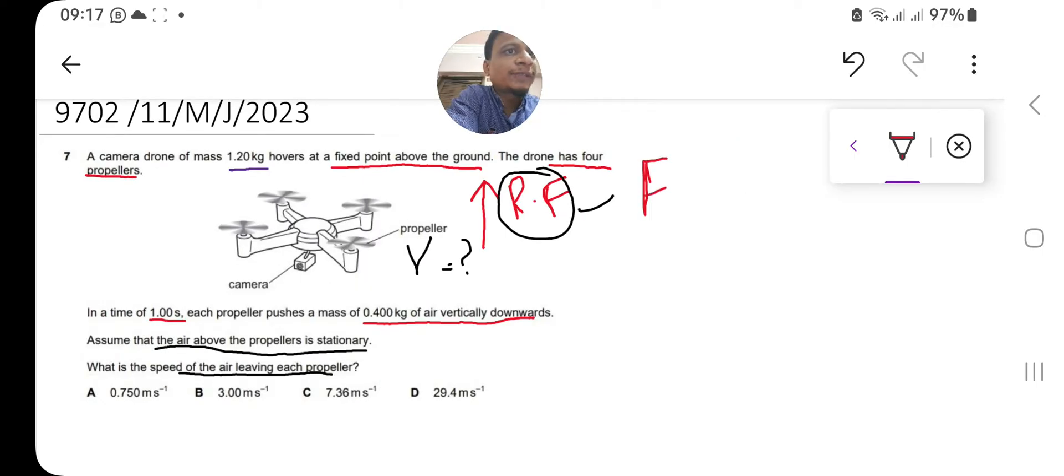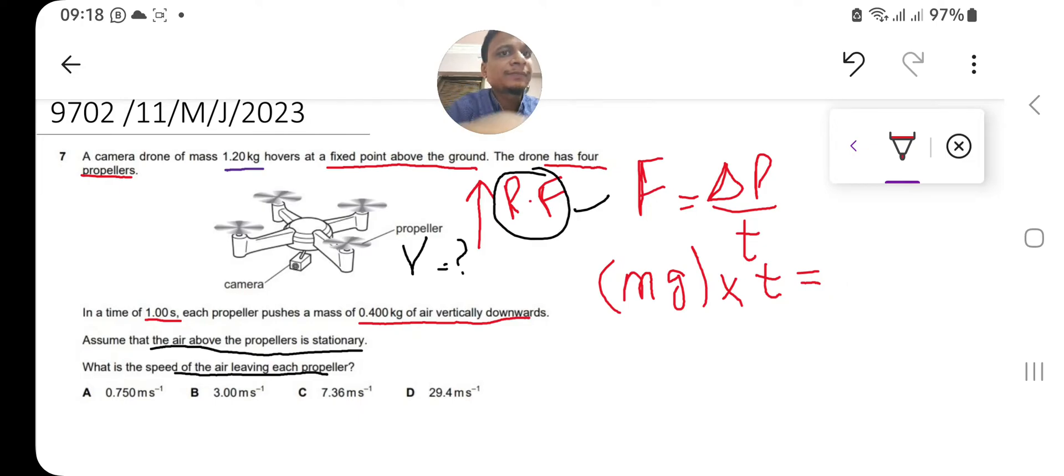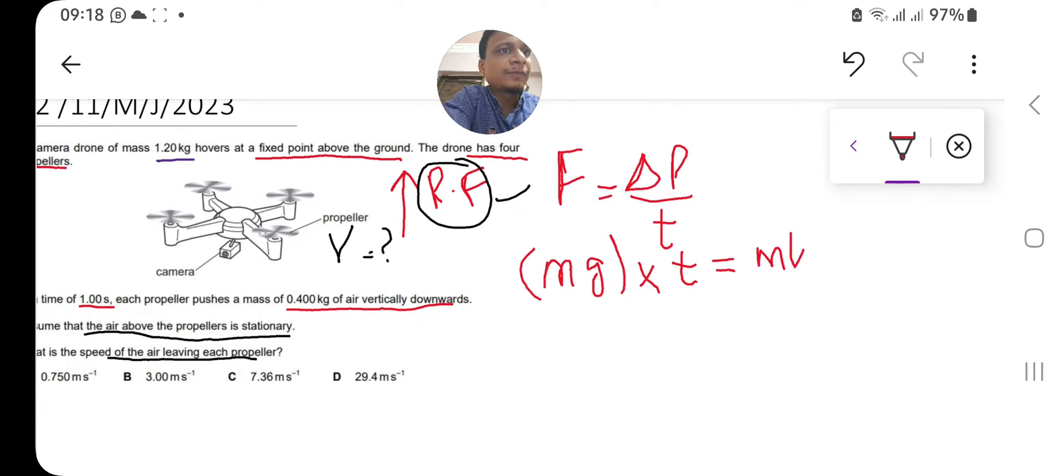We know that the force formula is rate of change of momentum. Force equals F = mg, and force also equals change in momentum over time. So F = Δp/Δt. Rearranging, Ft equals change in momentum, which is m·vf minus m·vi.